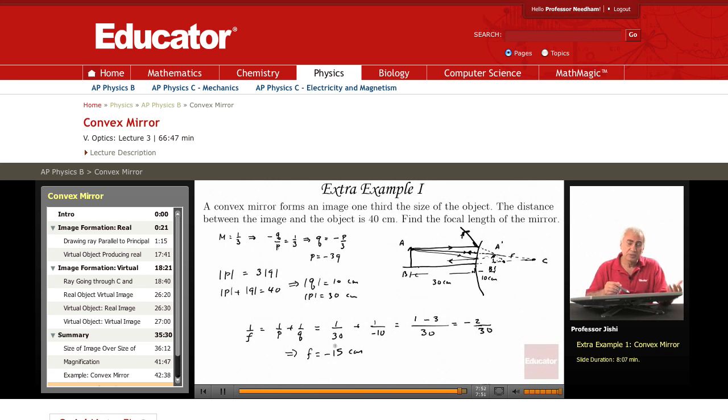In fact, if you end up with F positive, it means that something is wrong, because F must be negative for a convex mirror. And indeed, the calculation indicates that.